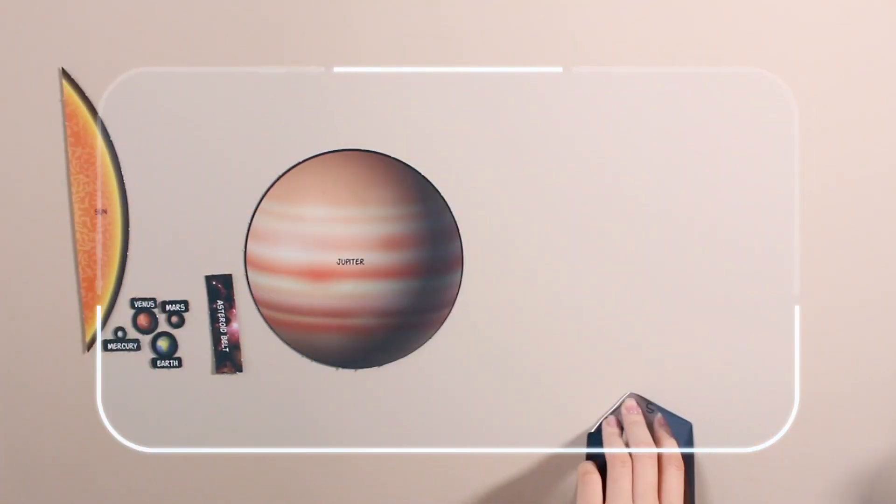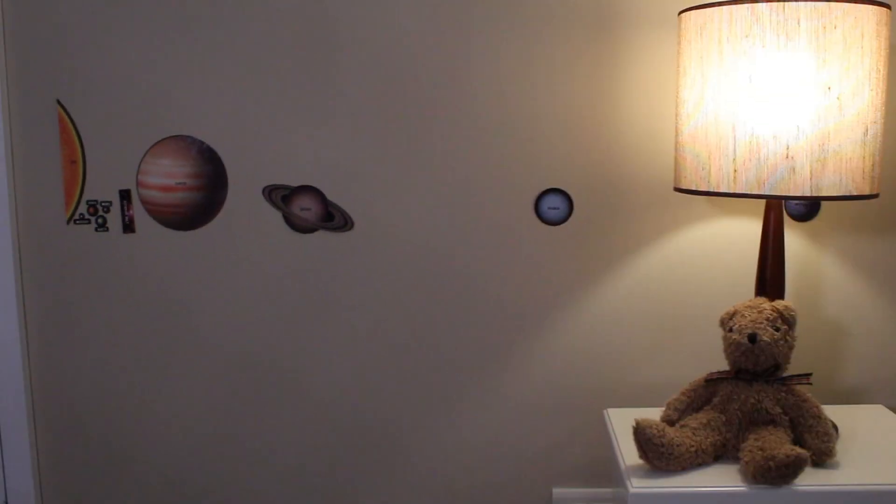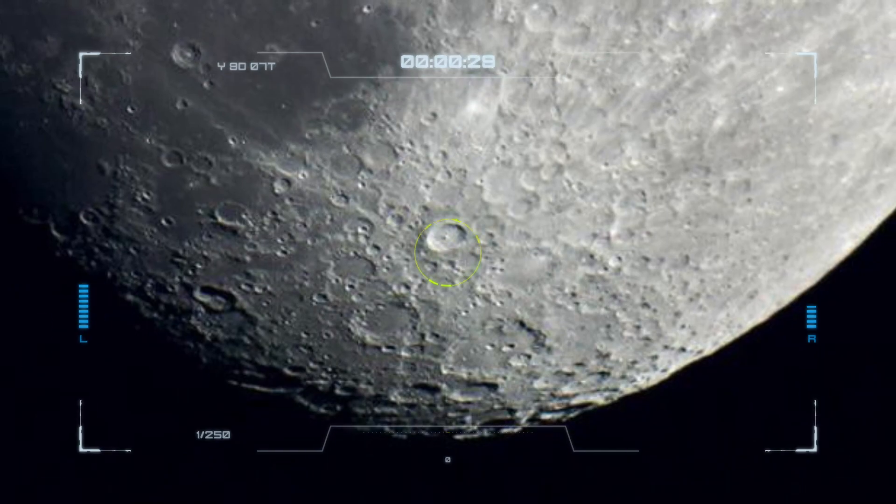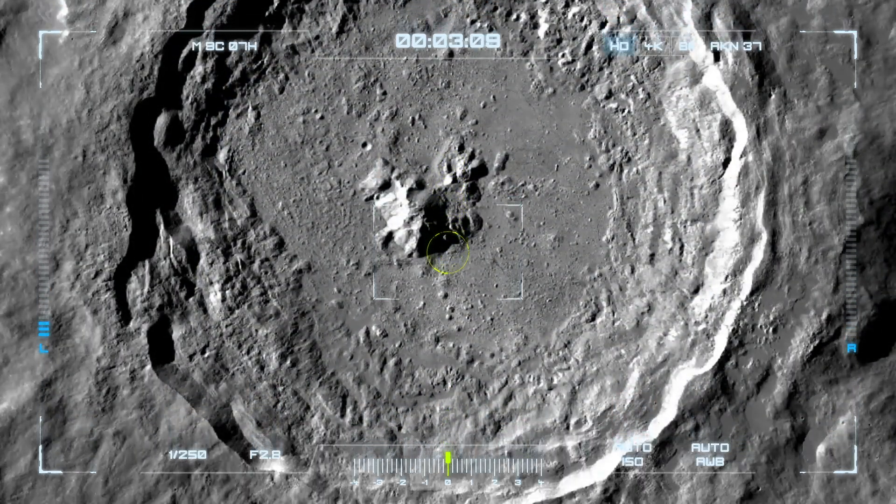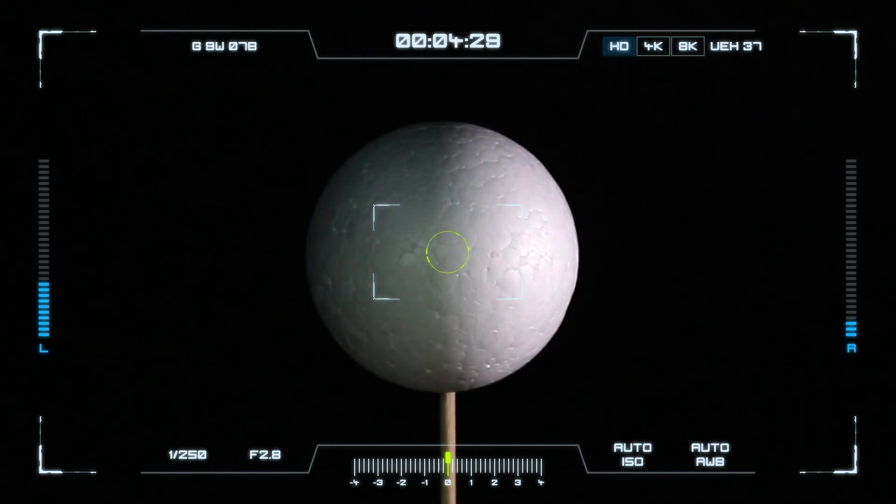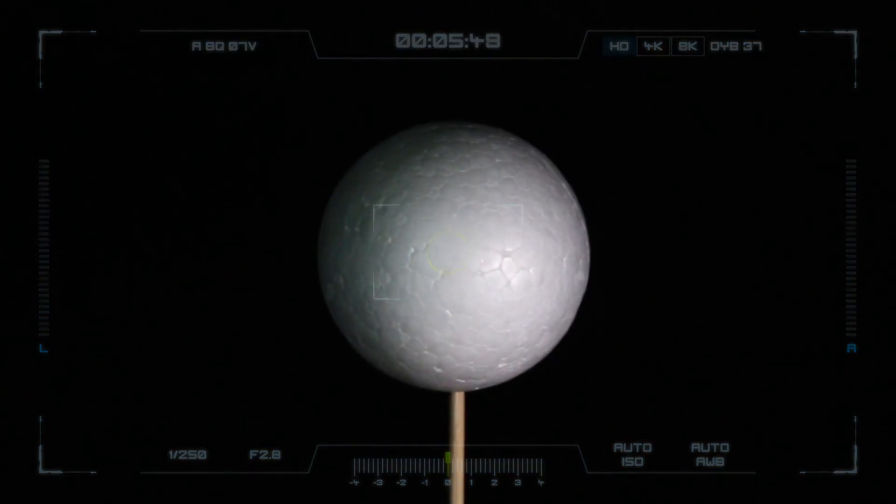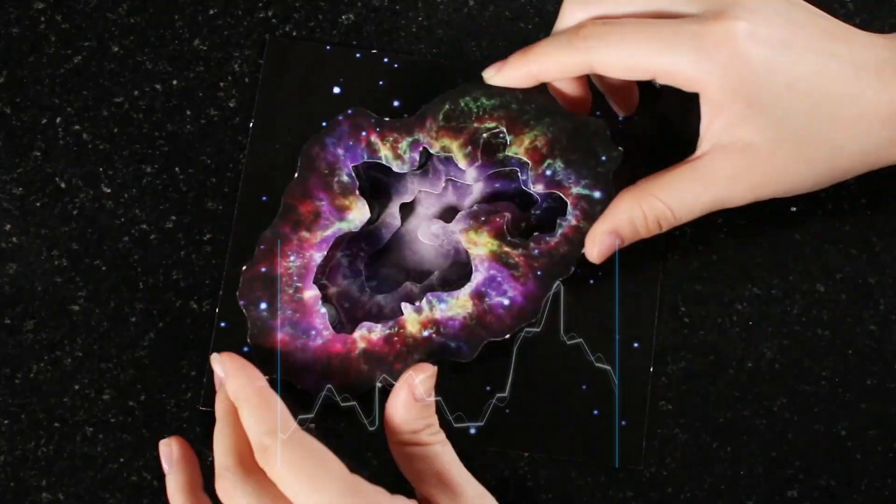Make a scale model solar system, a moon crater model. Experiment with the phases of the moon and build a 3D supernova model.